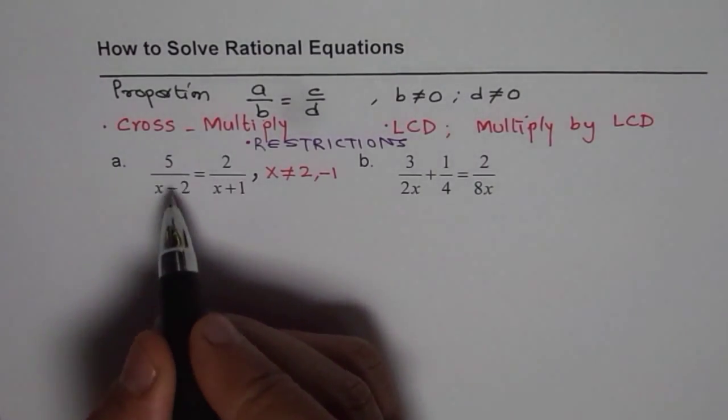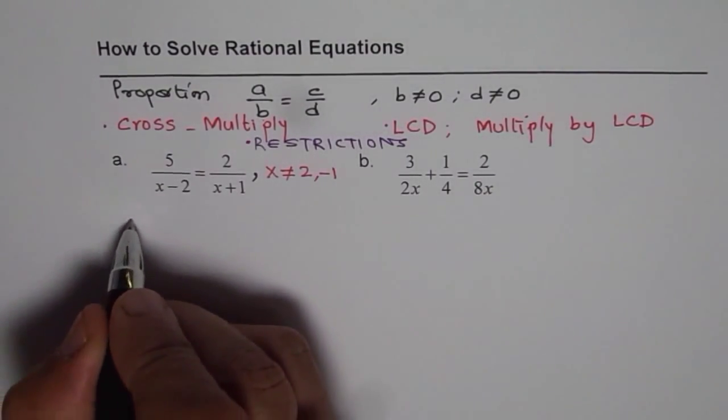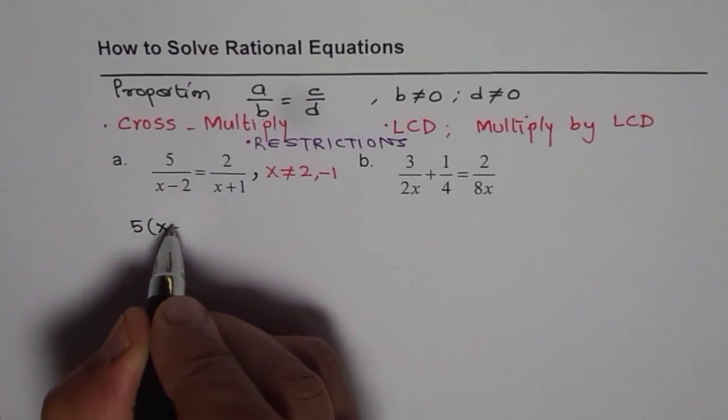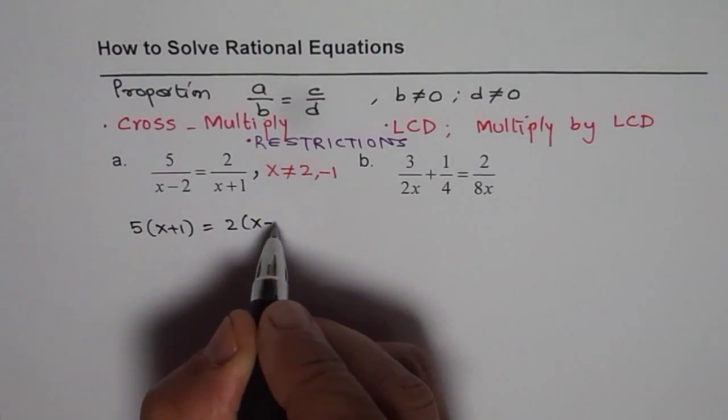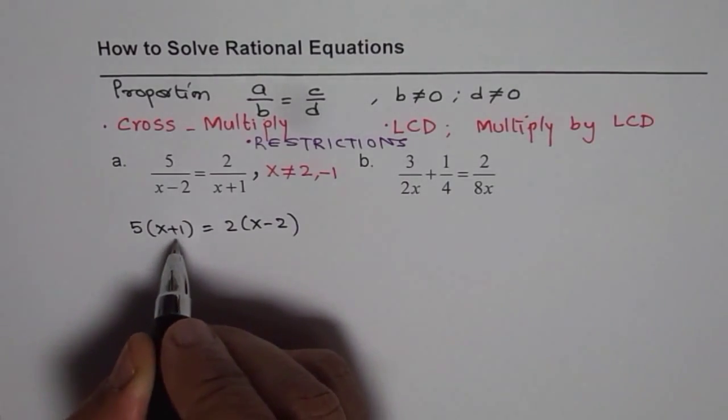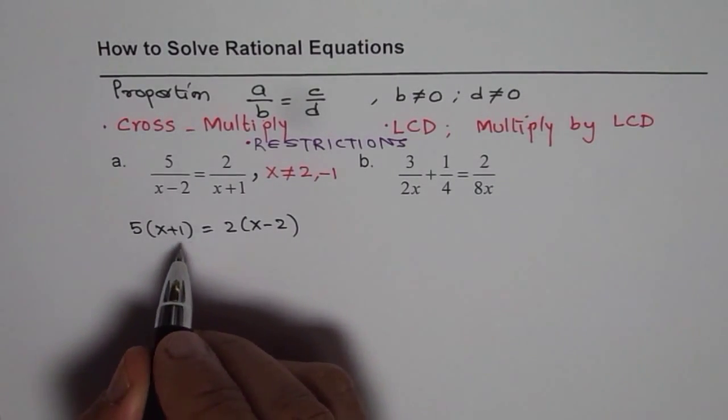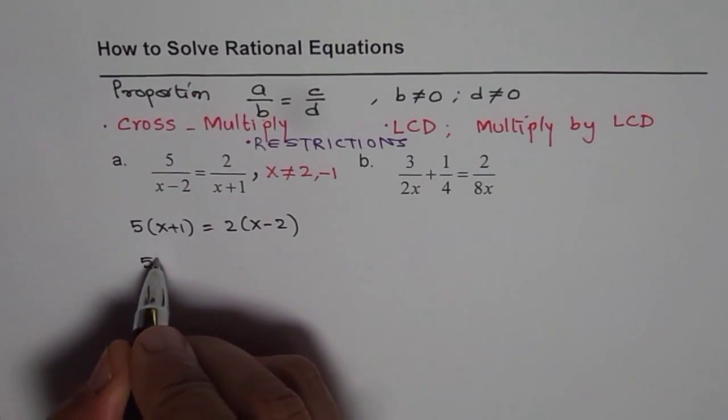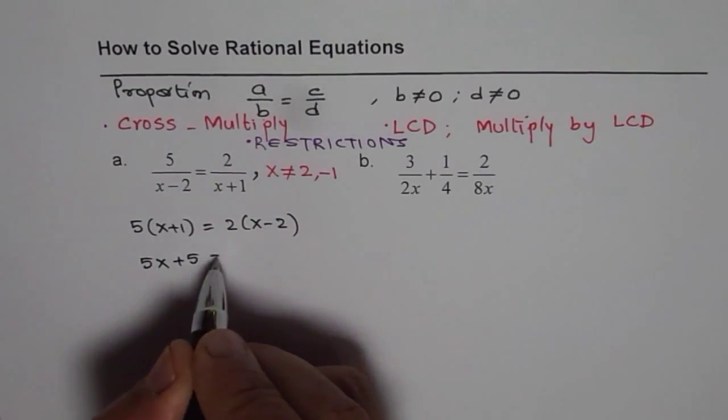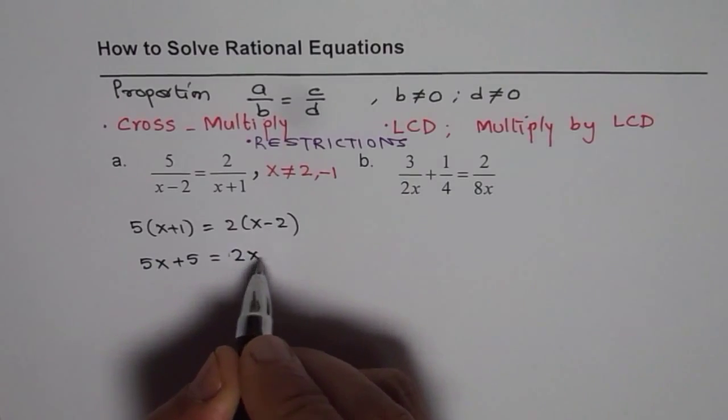So we will cross multiply since it is a proportion. So we get 5 times x plus 1 equals to 2 times x minus 2. Expand, that is distributive property. So first step is cross multiply, second is distributive property.